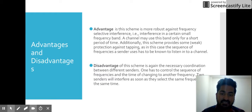What are the disadvantages of this scheme? The disadvantage is the same that we need coordination between different senders. One has to control the sequence of frequency and the time of changing to another frequency. Two senders will interfere as soon as they select the same frequency at the same time.